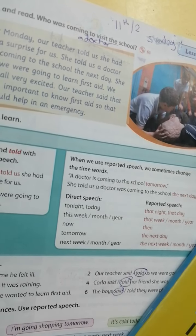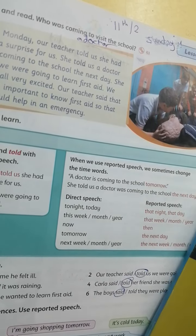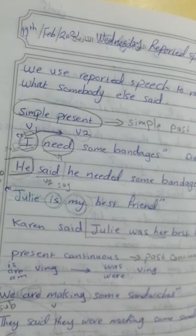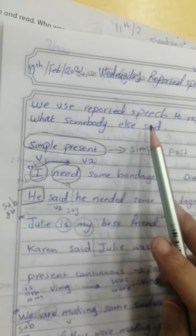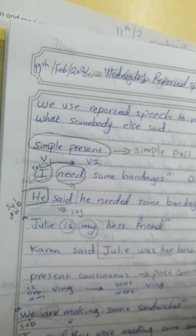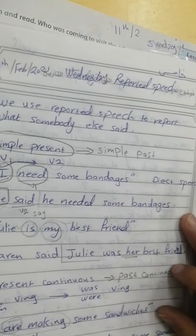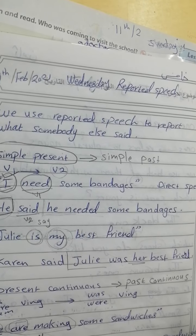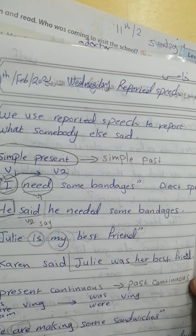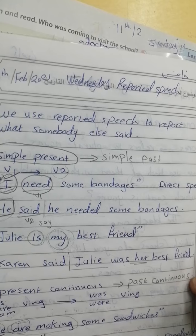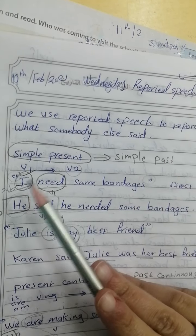Today we will complete the grammar: reported speech. In the last lecture, we said that we use reported speech to report what somebody else said. We changed simple present to simple past — يعني verb 1 بتحول لـ verb 2.